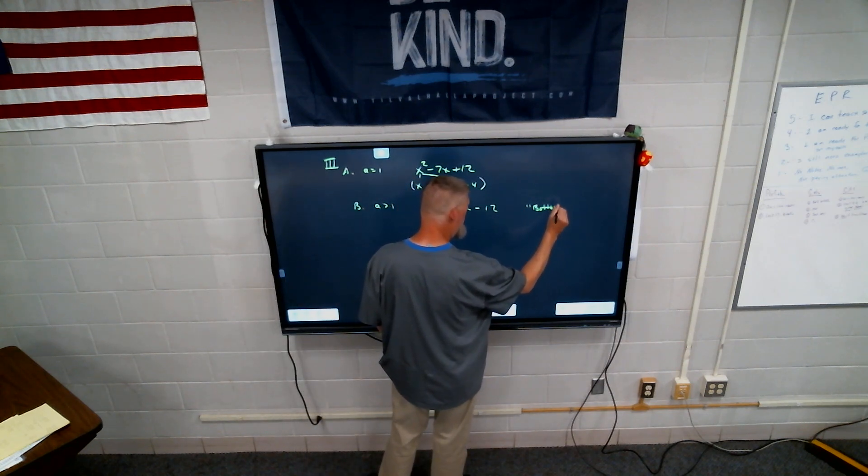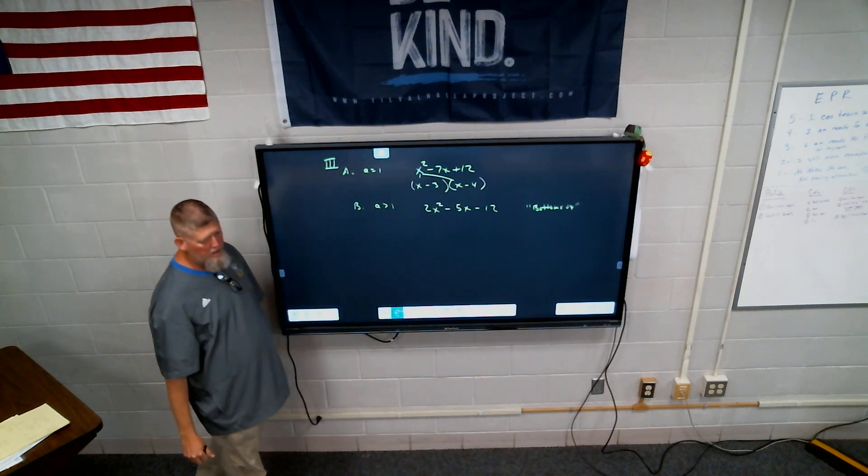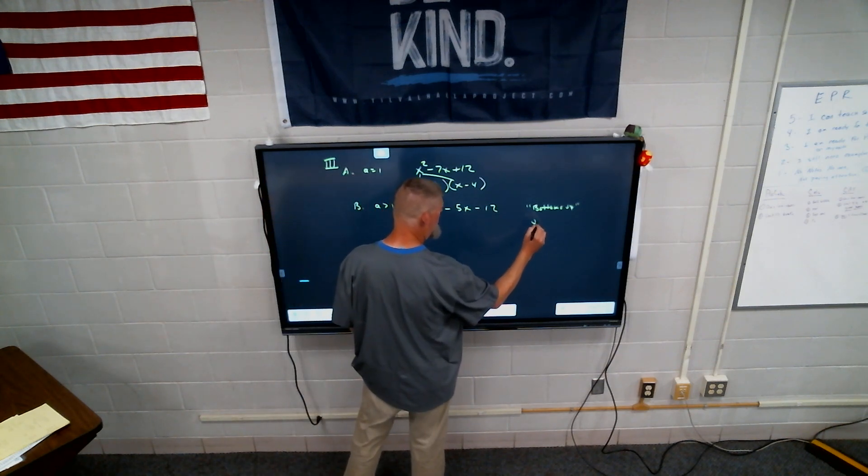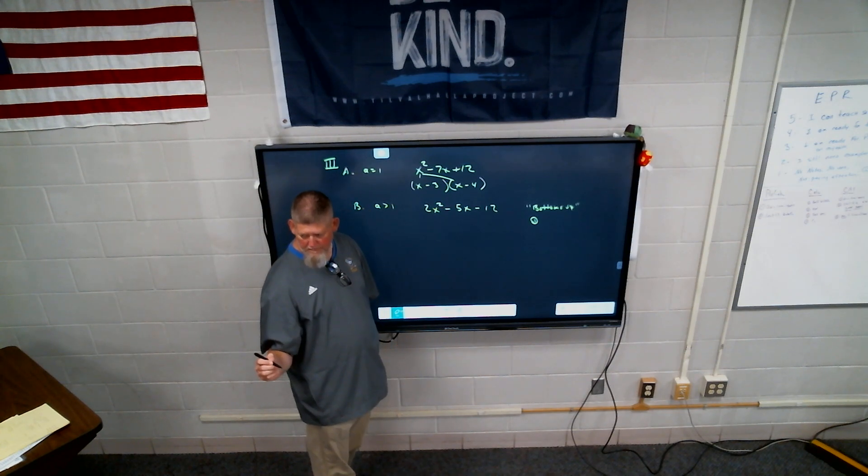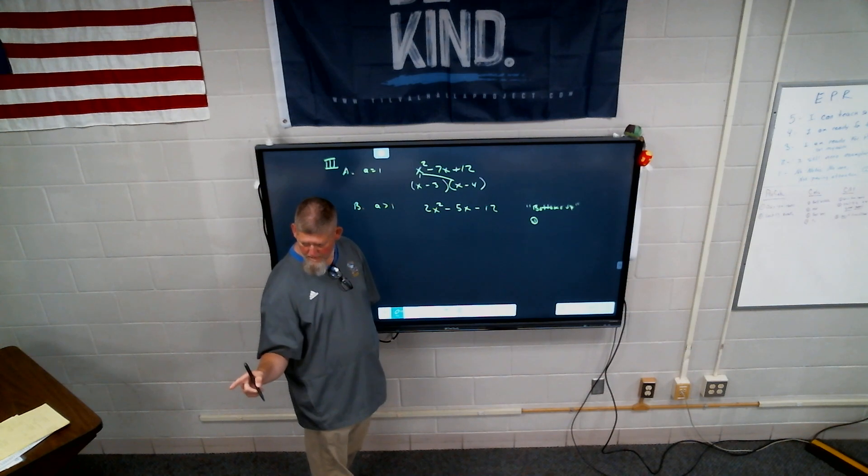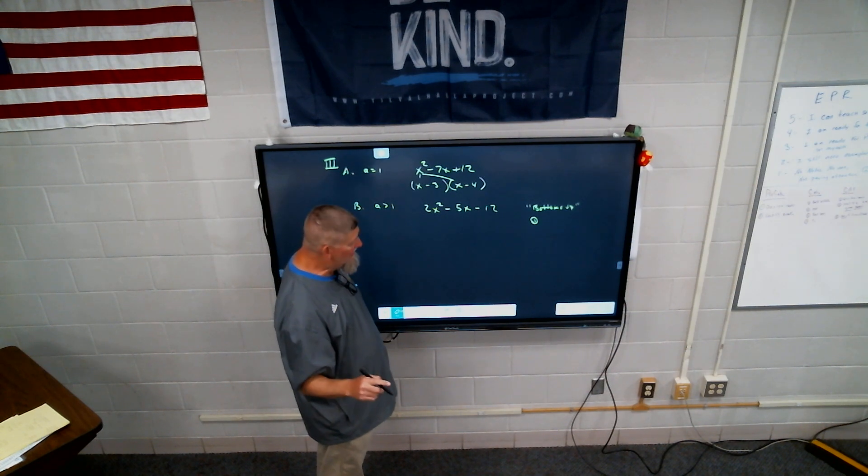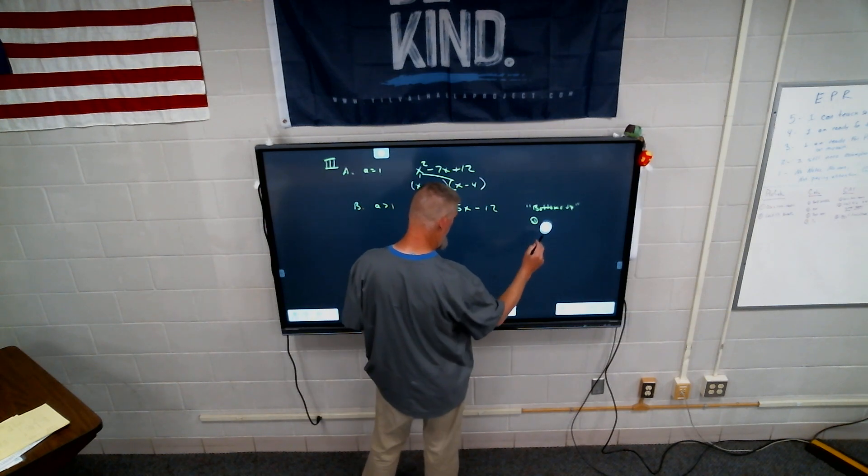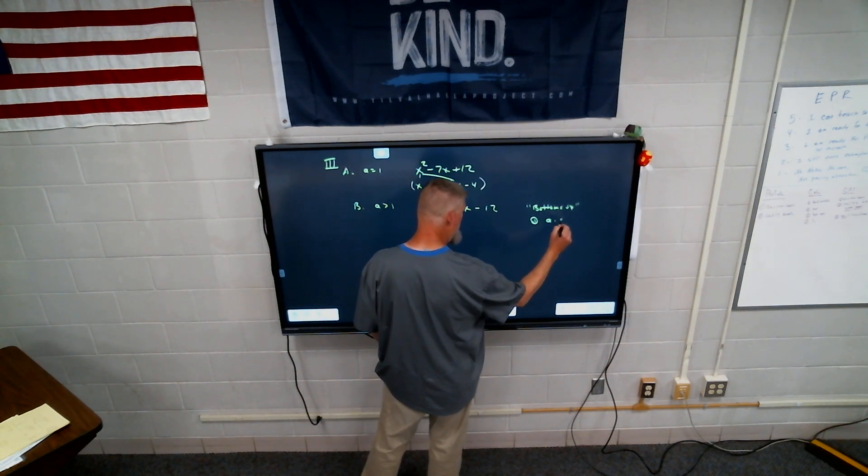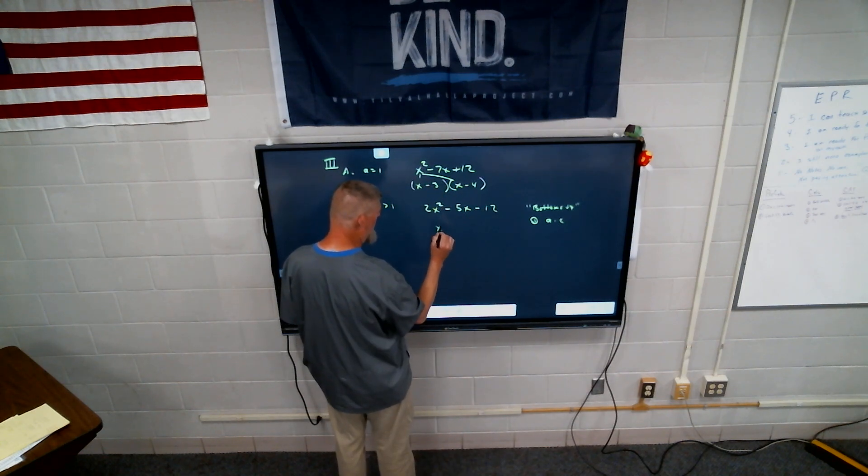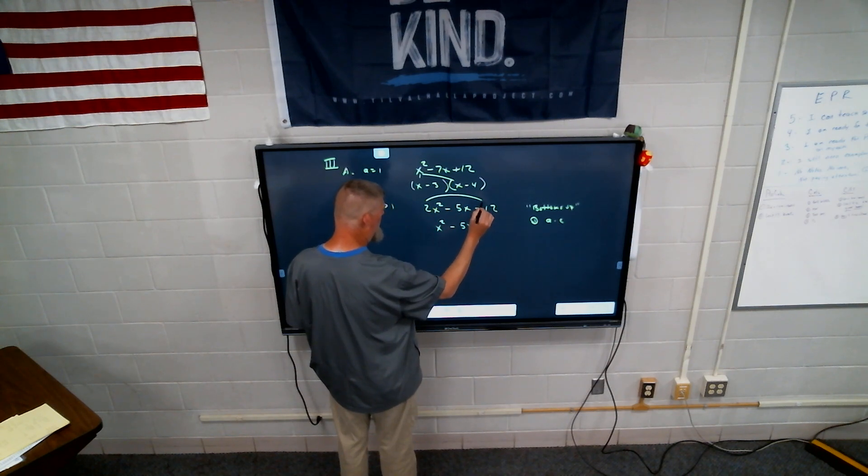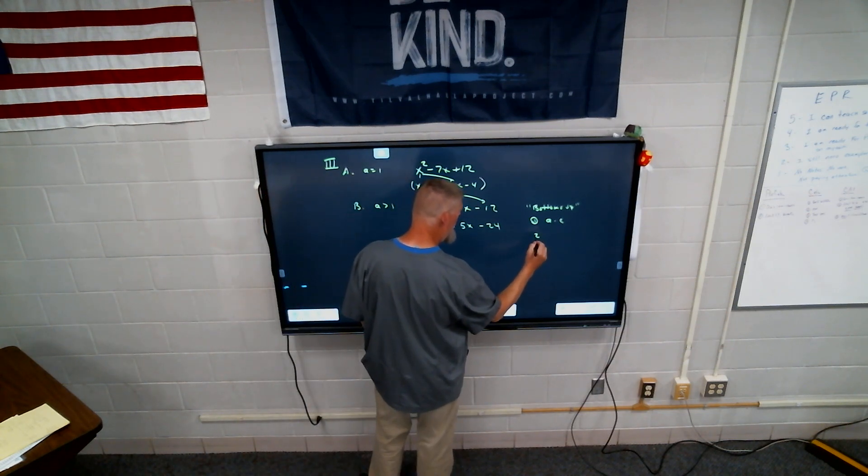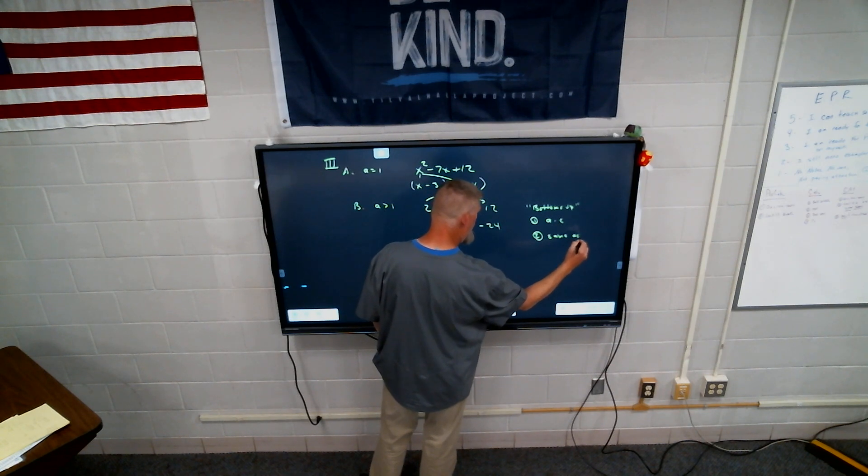What's the first step with bottoms up? Number one. You take the little a times the little c. So I'm going to do two times twelve. I have x squared minus five x. And I bring the two over as well. Minus twenty-four.